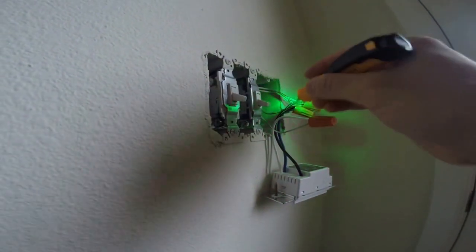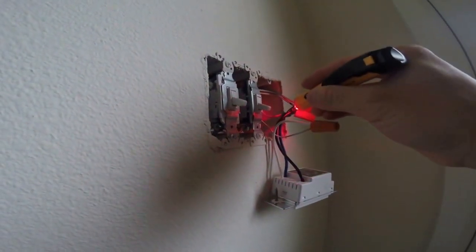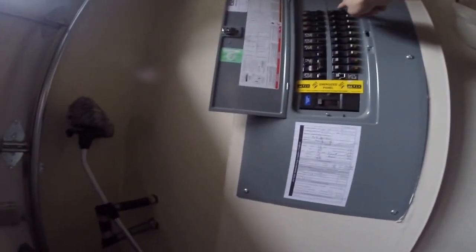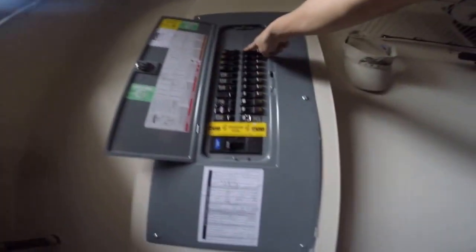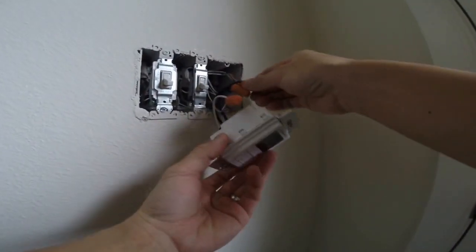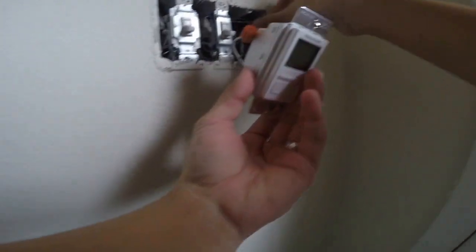Make sure you turn everything off. There it is. We're going to go back to the circuit panel and turn it off. Turn it off, so we're good. Now that the circuit is off and all the power is off, you can see there's no power.